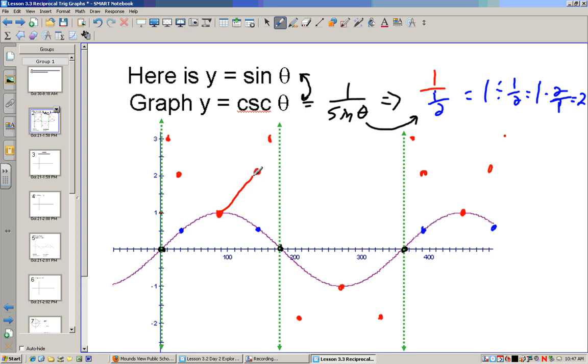But what it does is it makes a graph that looks like this. Now it never crosses this asymptote. It goes closer and closer to it, but never touches it. And this red part is our graph for cosecant.